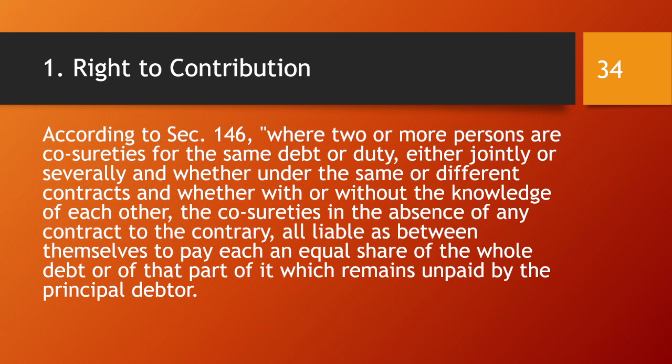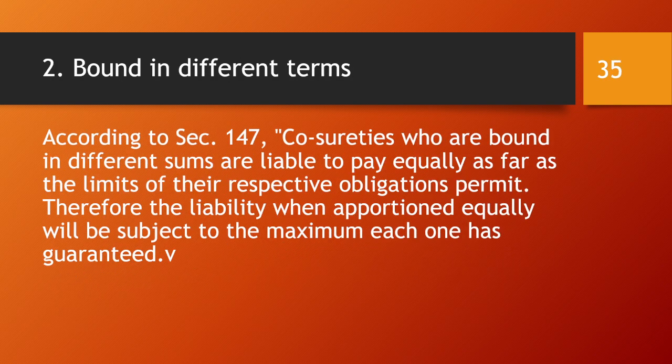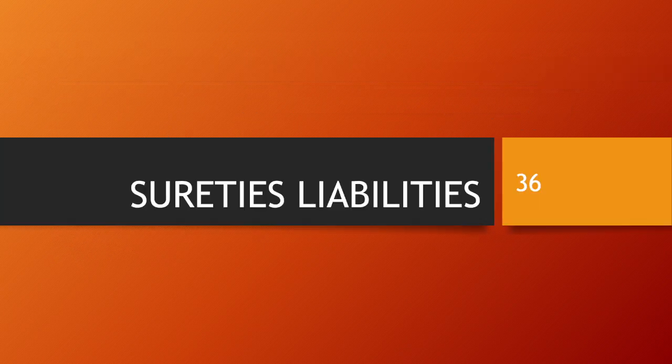If there are more than one surety, all are supposed to contribute equally, but they can decide the ratio among themselves by entering a contract. If there is no contract, they must contribute equally. According to Section 147, co-sureties who are bound in different sums are liable to pay equally as far as the limits of their respective obligations permit. Therefore, equal liability is subject to the maximum amount each one has guaranteed.